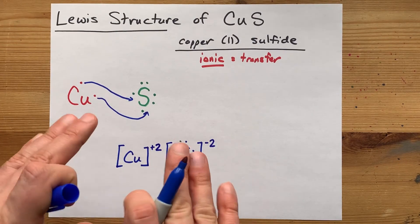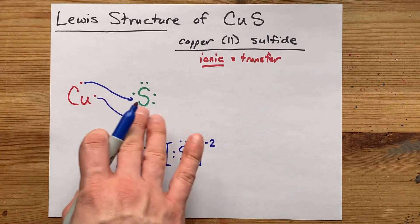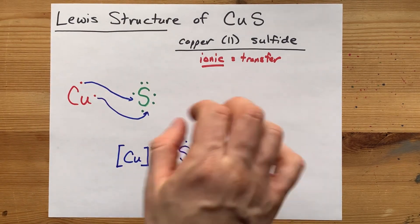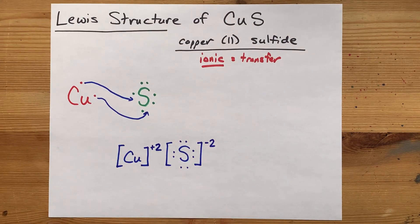This is the complete Lewis structure for copper 2 sulfide, and this here is me showing the transfer of how it happened. Thanks for being along for the ride, and best of luck.